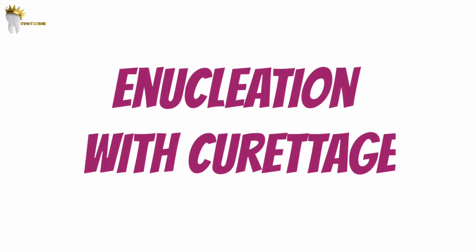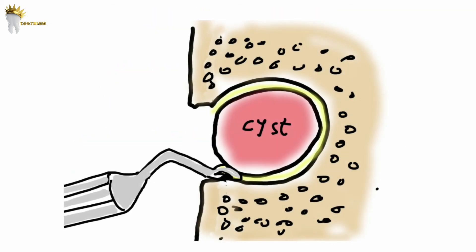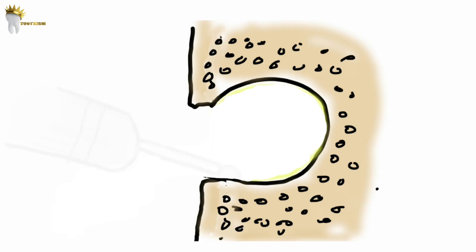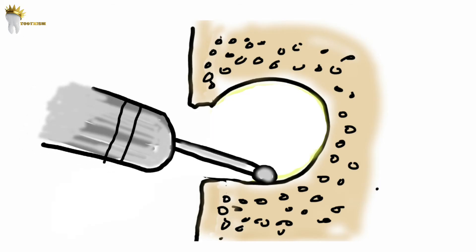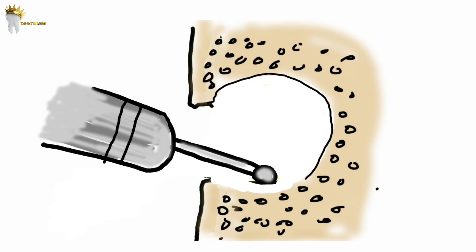Next is enucleation with curettage. It simply means that after enucleation is done, a curette or a burr is used to remove 1-2 mm of bone around the entire periphery of the cystic cavity. This is done to remove any remaining epithelial cells that may be present in the periphery of the cystic wall or bony cavity, as these cells could grow and form a new cyst.